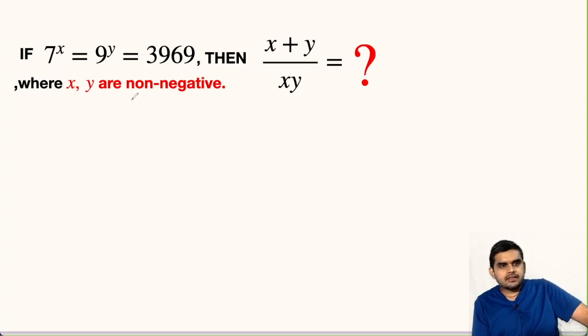In this question it is given that 7^x = 9^y = 3969 and we are asked to find the value of (x+y)/(xy). Also it is mentioned that x and y are non-negative values.